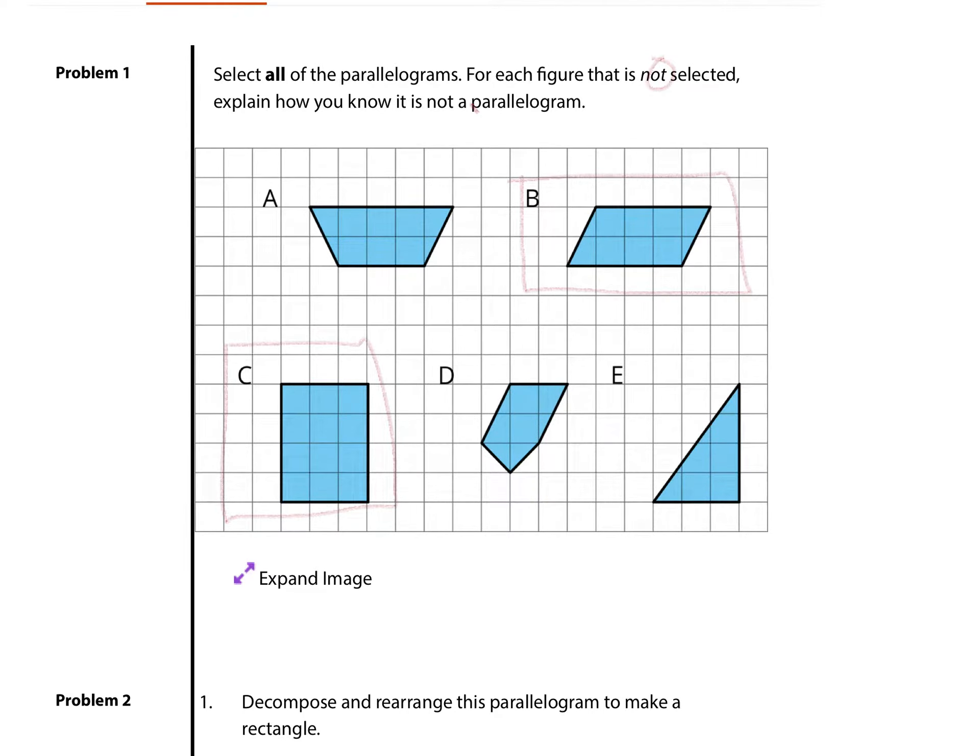Parallelograms must have a couple of features. One, four sides. The opposite sides are equal in length and parallel. And for the opposite angles, they're congruent. They're equal.